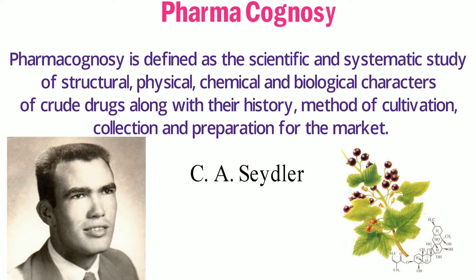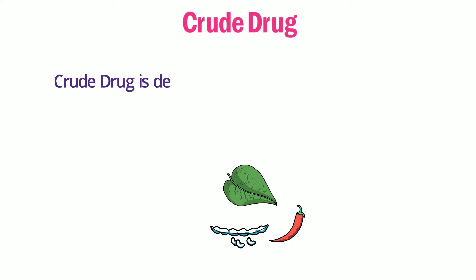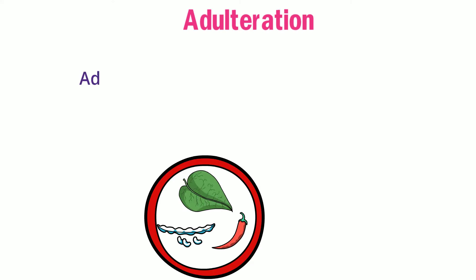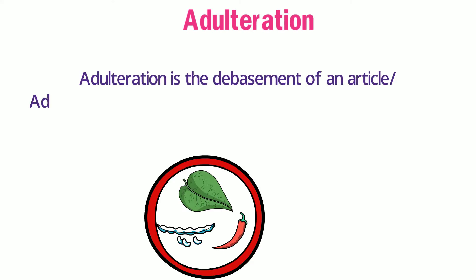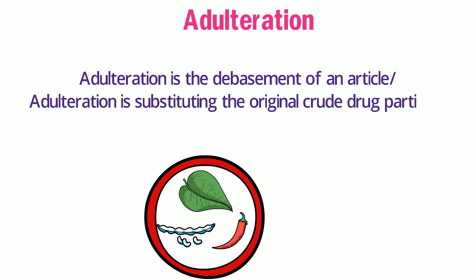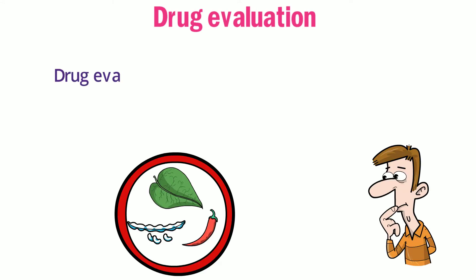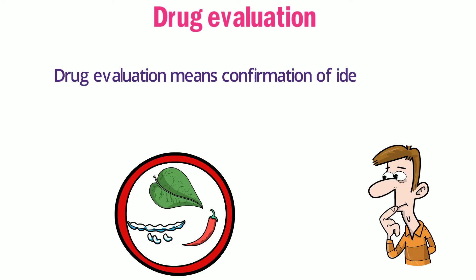Crude drug is defined as a plant or animal drug that has undergone no other processes than collection and drying. Adulteration is the debasement of an article — it involves substituting the original crude drug partially or completely with another similar type of drug. Drug evaluation means confirmation of identity, determination of purity and quality, and detection of the nature of adulterant.